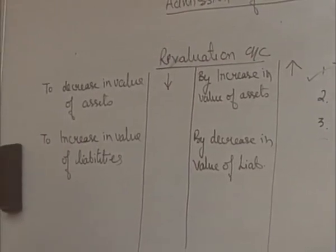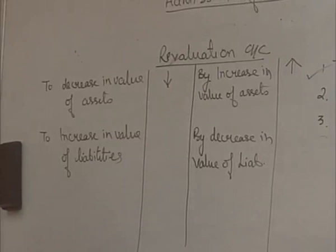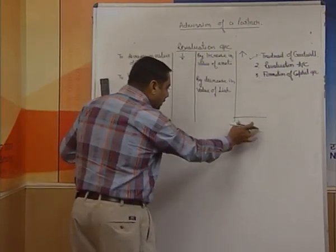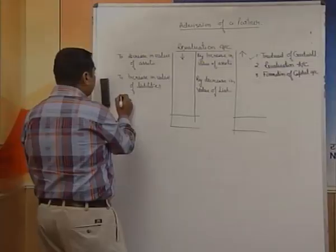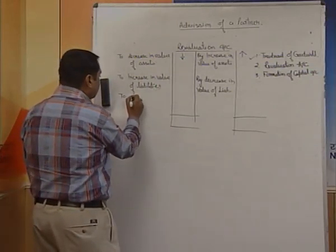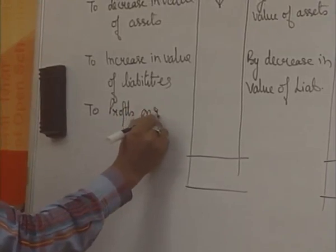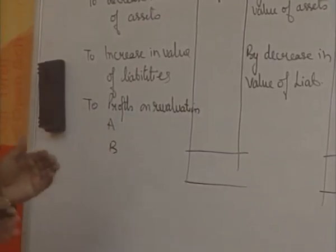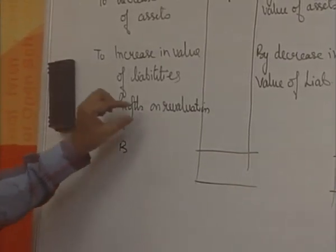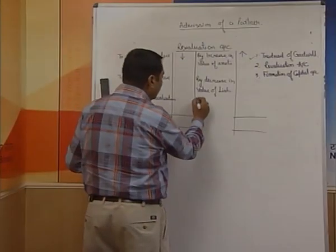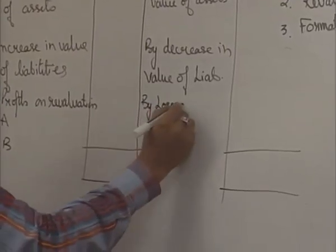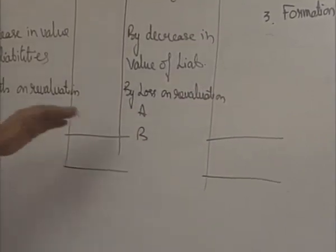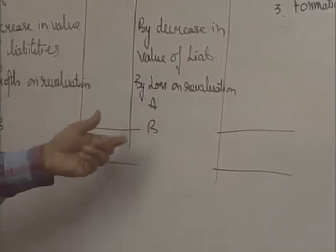Make the total of both sides. Whichever side is greater, write the same total on the other side. If the credit side total is more, the balancing figure on the debit side is written as 'To Profit on Revaluation', and that profit is distributed among the old partners in their old ratio. If the debit side is more, we suffer a loss: 'Loss on Revaluation' is written on the credit side and distributed among old partners in their old ratio.